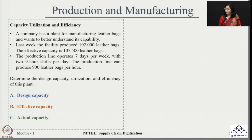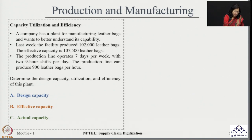When we talk about effective capacity, it is considered after excluding the planned resource unavailability — for example, if there is a plan for preventive maintenance or setups or changeover, that is considered in calculating this capacity, which is why it is called effective capacity. The actual capacity takes care of all the unplanned resource unavailability from the effective capacity, which can include scenarios like machine breakdown or unavailability of spare parts which are not in the control of the given processes.